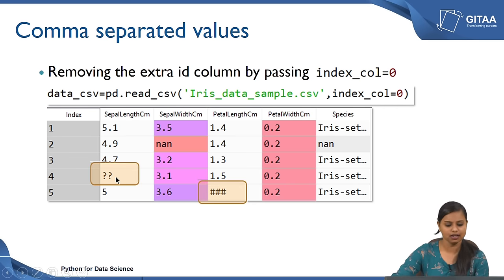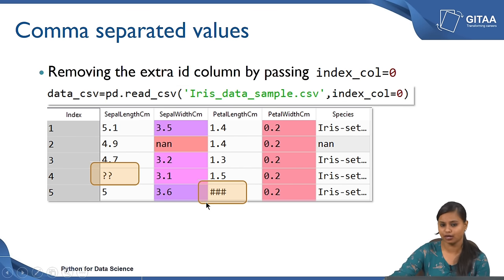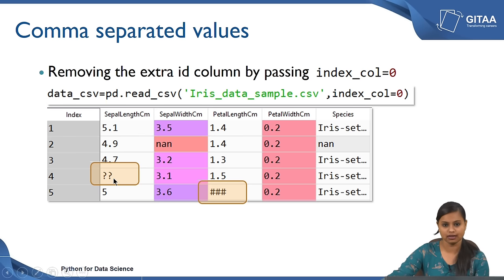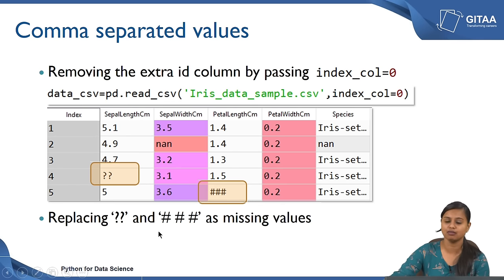If you see here there are special characters other than numerical values, like question marks and hash. These can be representations of missing values. However, all the blank values will only be replaced with NaN — in Python by default, all the blank values will only be replaced with NaN, not other special characters. But if you are sure that these special characters represent missing values in your data and you want to consider them as NaN, you can do that by replacing all the question marks and hash as missing values.